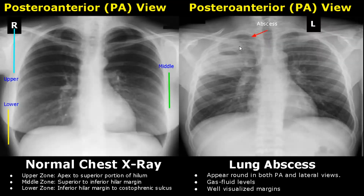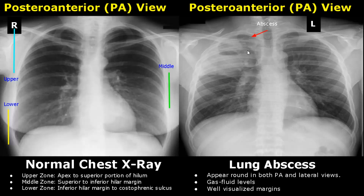A lung abscess will usually appear round in both PA and lateral views. It will have gas fluid levels — that means there is air on one side and fluid on the other side inside the abscess. The abscess will have well visualized margins.